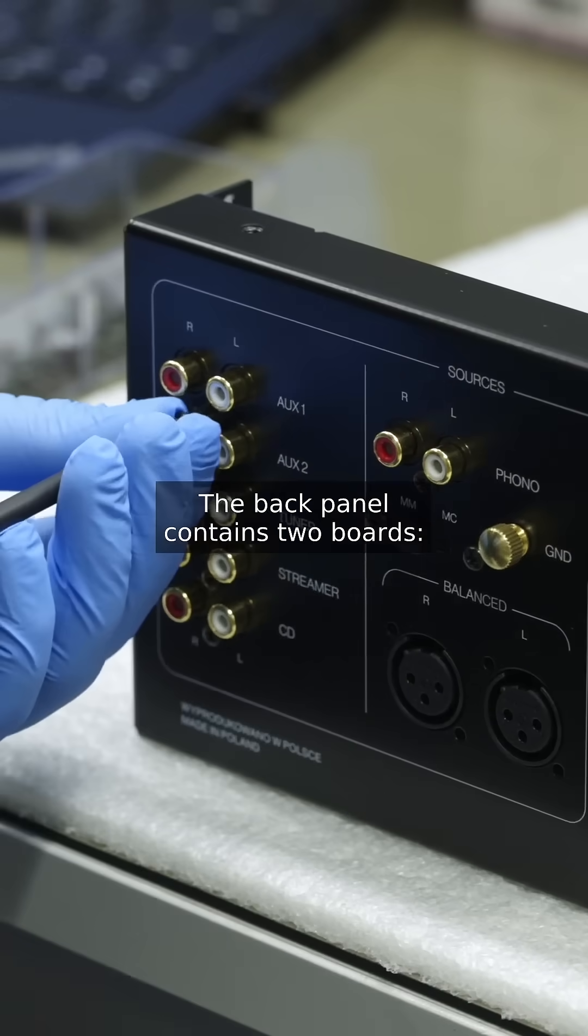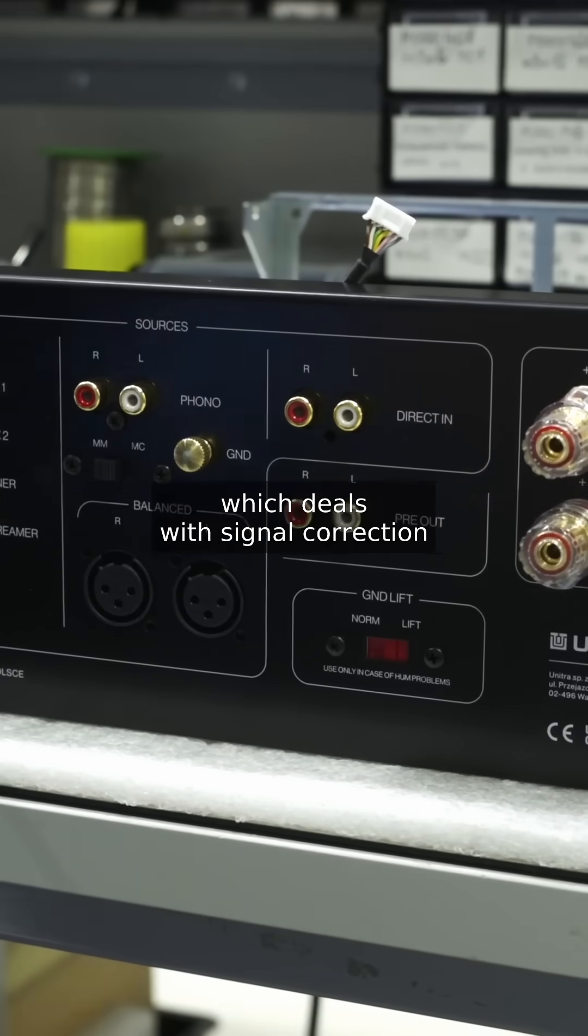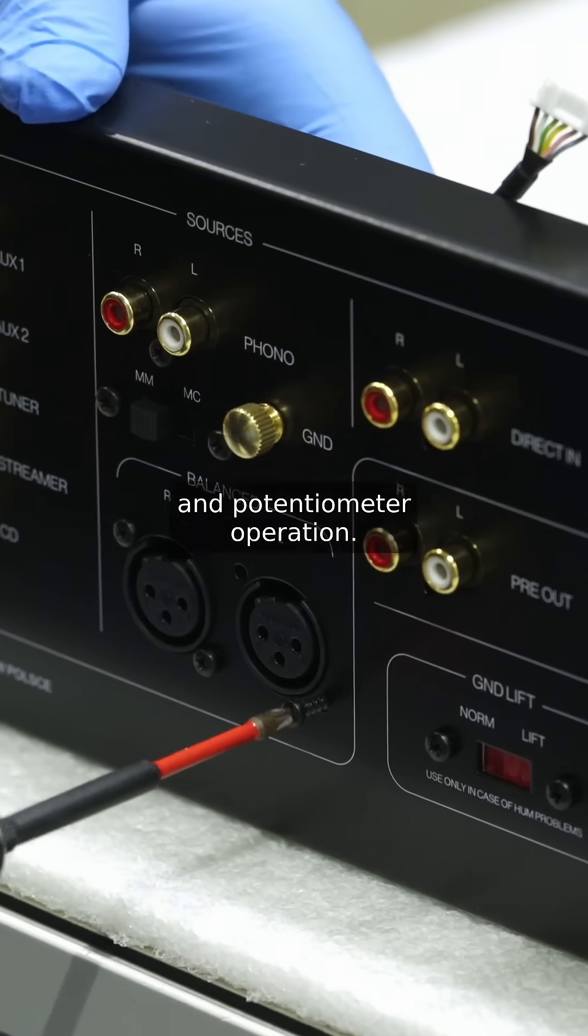The back panel contains two boards, outputs for speakers and an input board, which deals with signal correction and potentiometer operation.